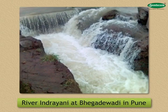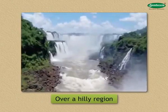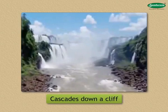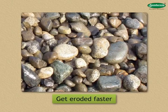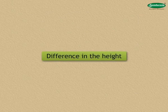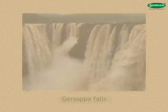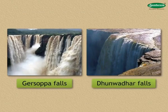Fourth, Waterfall. Water flowing over a hilly region at times cascades down a cliff, giving rise to the formation of a waterfall. In some areas, the hard and soft rocks lie next to each other. The soft rocks get eroded faster than the hard ones, leading to a difference in height along the river bed and a waterfall is formed. For example, Gersoppa Falls on the Sharavati River and Dhuwadhar Falls on the Narmada River are famous.